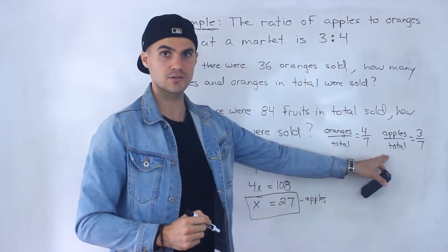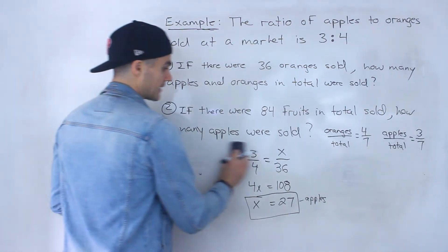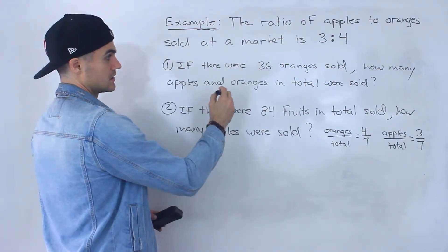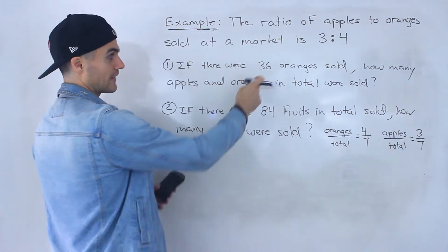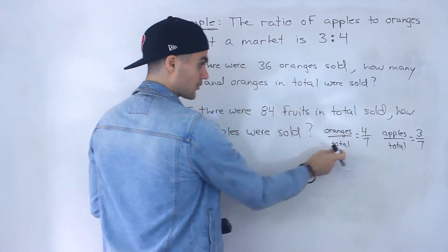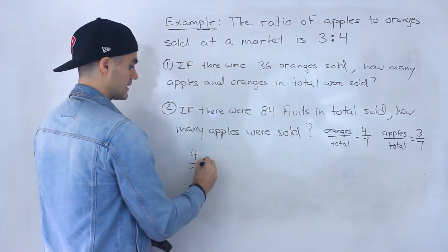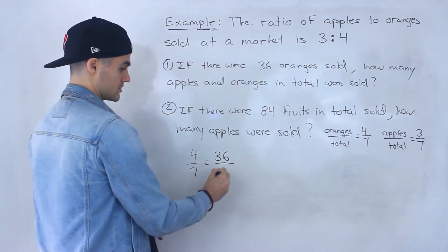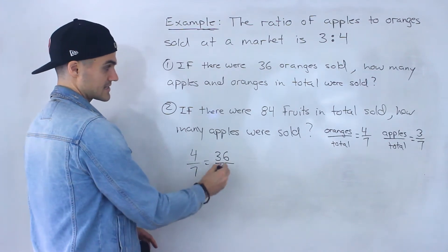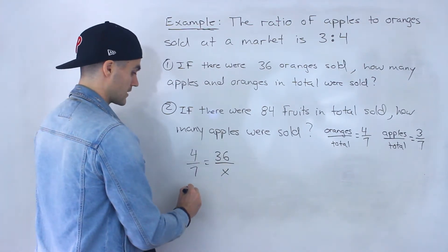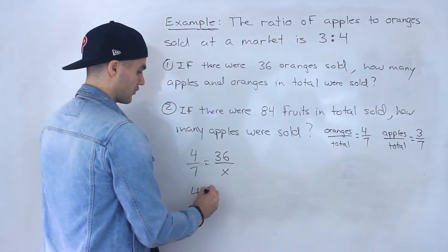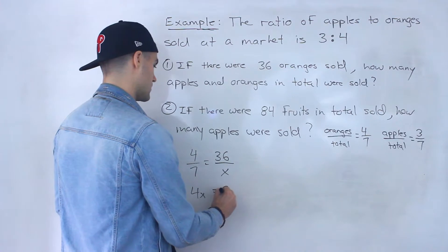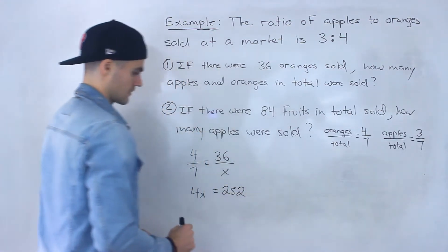You can also use these ratios to solve these questions. Notice that in number one they're asking us what's the total sold and they give us the oranges. So notice we got the oranges to total ratio. We can say 4 over 7 equals 36 oranges over x, x is the total that we're solving for. When we cross multiply here, we would end up with 4x equals 252.